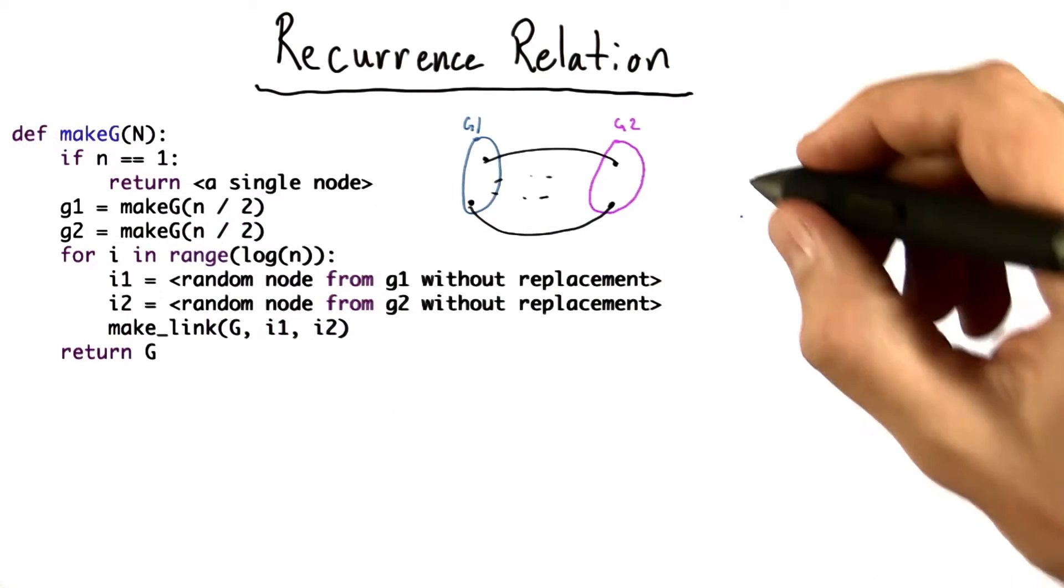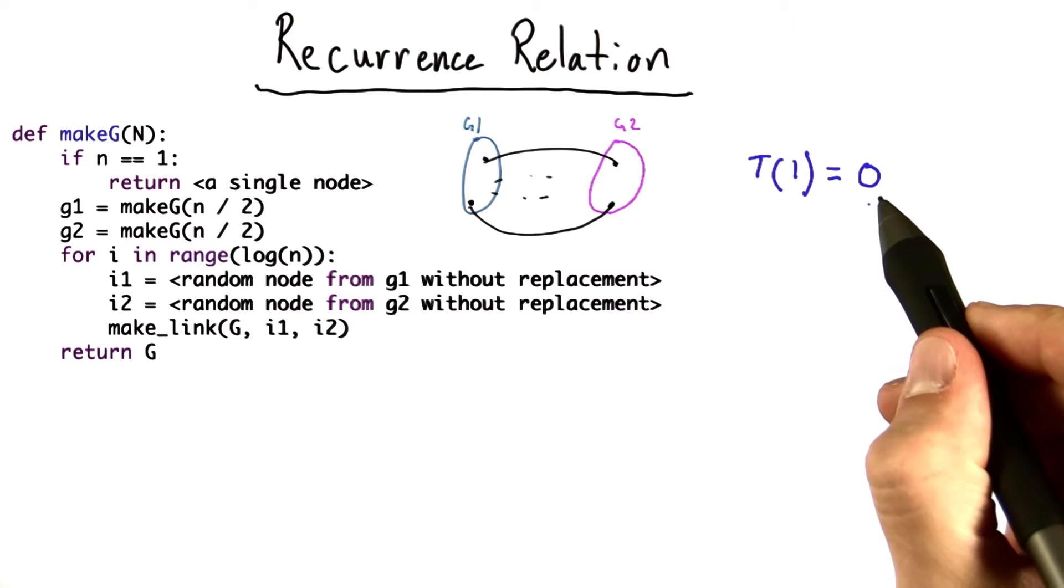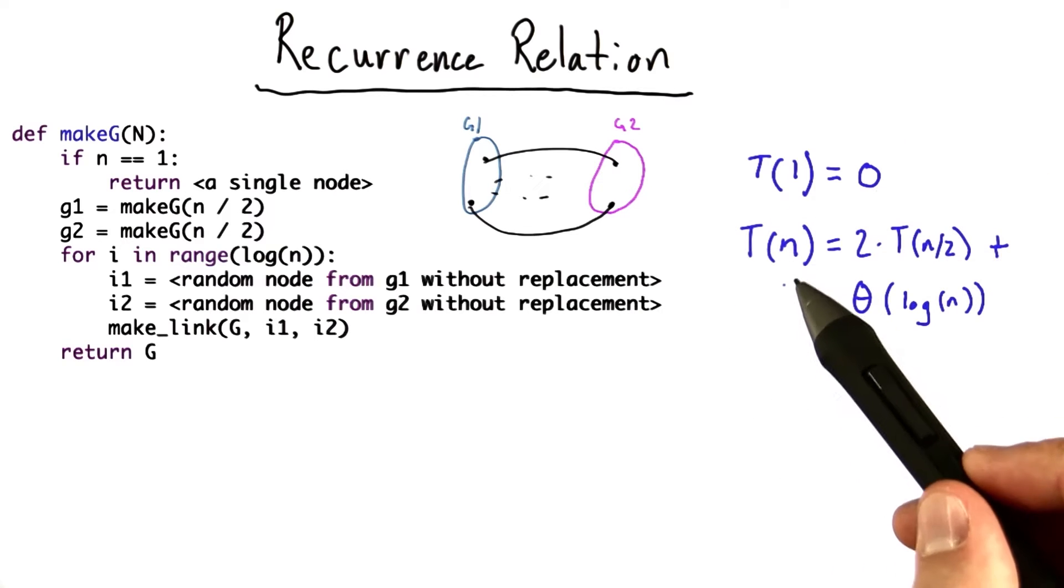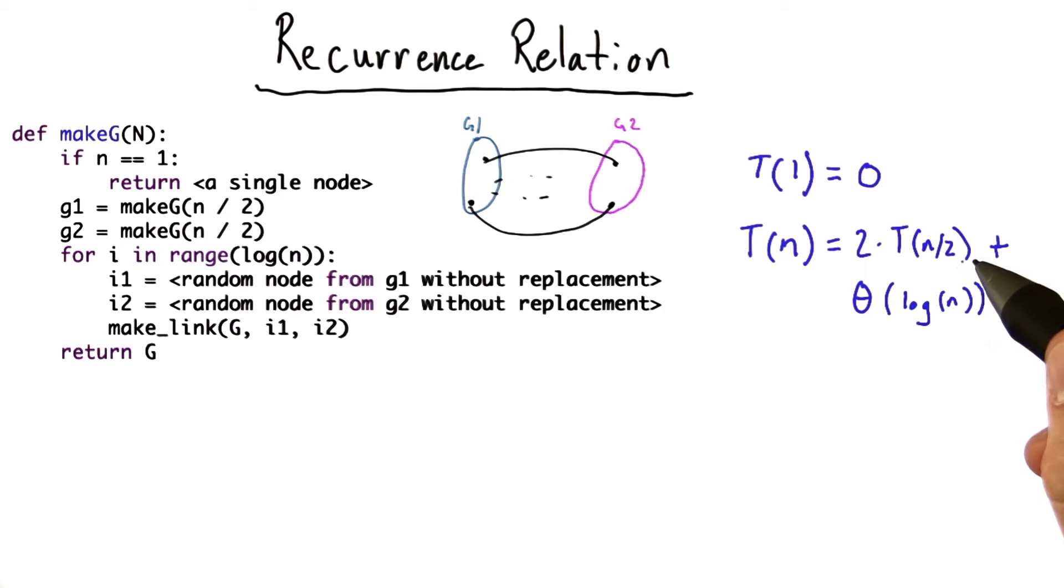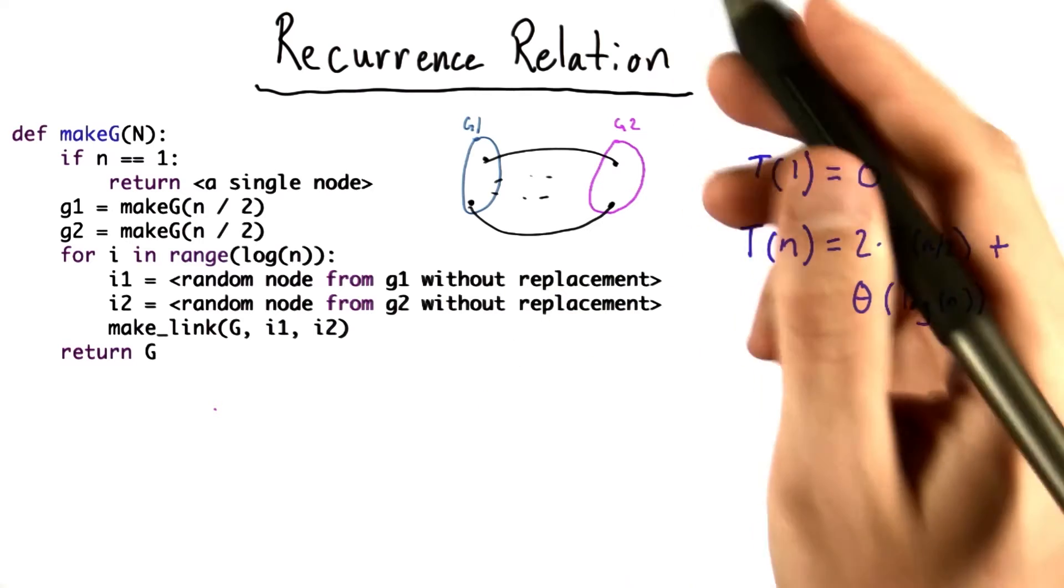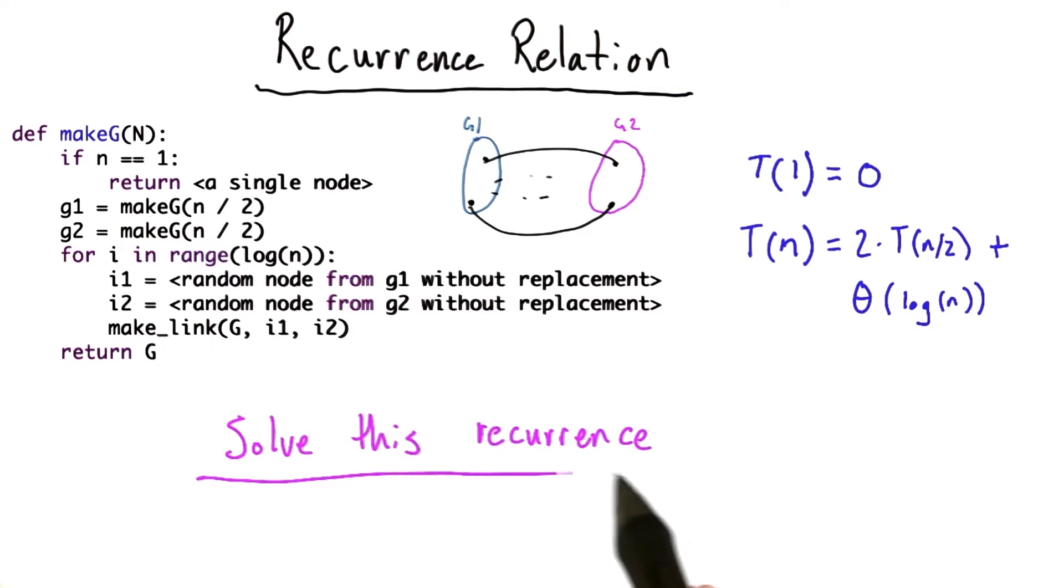So this has the recurrence relationship that when we have one node, we have zero edges. And if we have n nodes, we get 2 times the number of nodes we have for a graph of half the size plus big theta of log n. And so what we want you to do is to solve this recurrence.